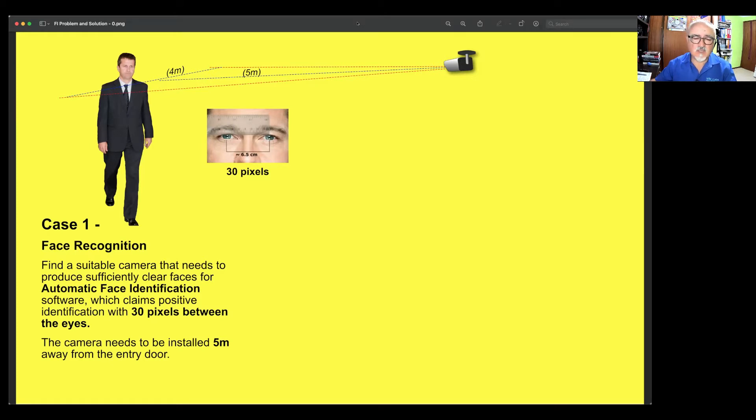Some manufacturer will ask you to produce an image of maybe 30 pixels by 30 pixels for the headshot. But more accurate and probably more common is the required pixels between the eyes. And in this case, we've got a particular example where the client says our software can identify if you've got at least 30 pixels between the eyes.